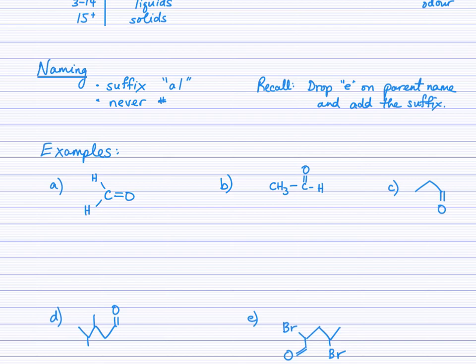Moving along now with the naming. The key with naming aldehydes is to remember that the formyl group, that carbon, is always carbon number one, and that the suffix is al, a-l. You might think of that as you think of aldehyde. We never number that aldehyde suffix because it's always going to be carbon number one. Don't forget to drop the e on the parent name before you add the suffix.